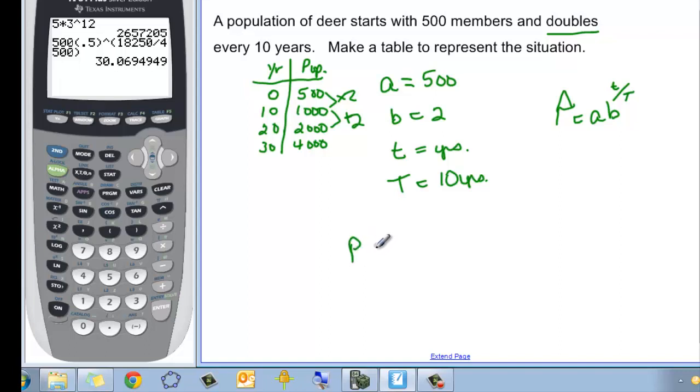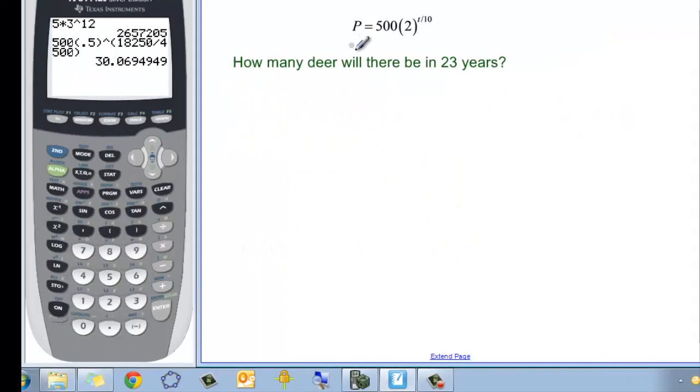So if we want to write our formula then, P is equal to a, which is 500, times our multiplying factor, which is doubling, or 2, to the T divided by 10. So here we have our function.